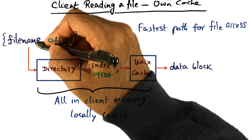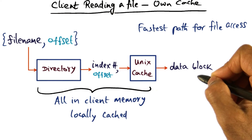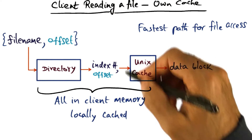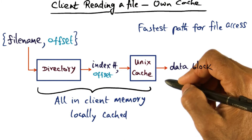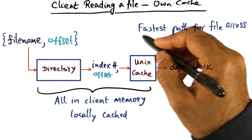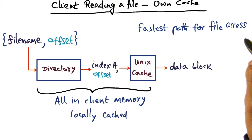In other words, going from the file name to the data block that is associated with the file is all happening through the client memory because of local caching. And this is the fastest path for file access, and hopefully, this is the common case.